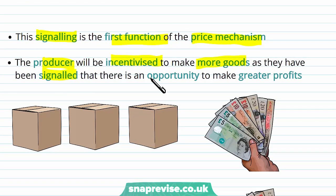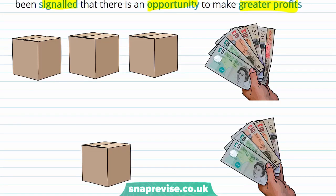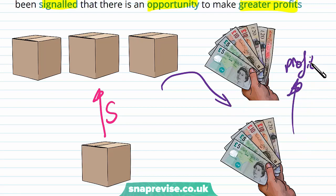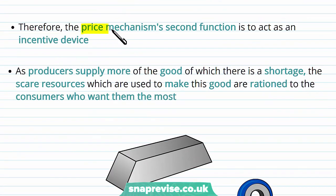The producer will be incentivised to make more goods as they have been signalled that there is an opportunity to make greater profits. So in increasing their supply they will reap the benefits of having higher profits, which is the intention of firms. Therefore the price mechanism's second function is to act as an incentive device.